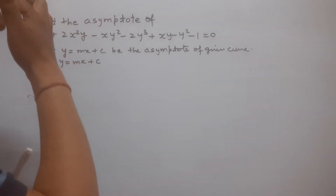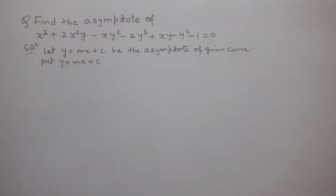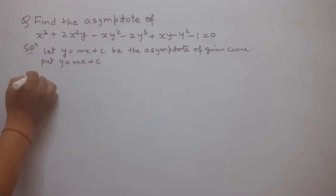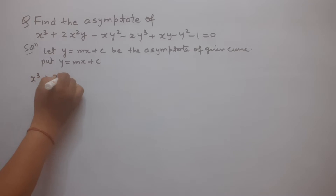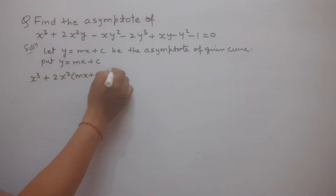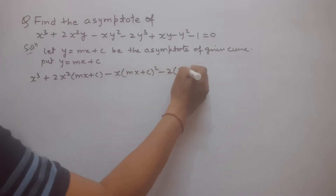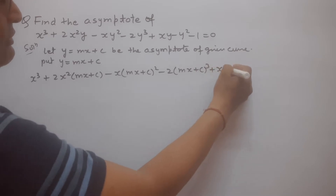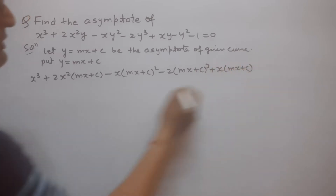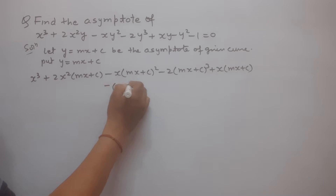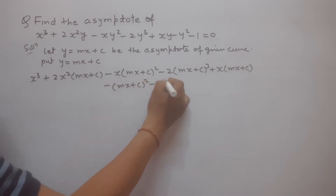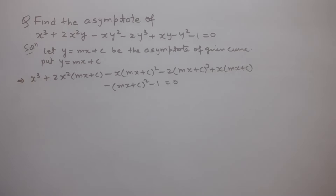Now we get: x² + 2x²(mx + c) − x(mx + c)² − 2x(mx + c)³ + x(mx + c) − (mx + c)² − 1 = 0. You can see that the given curve with y = mx + c substituted is set equal to 0.